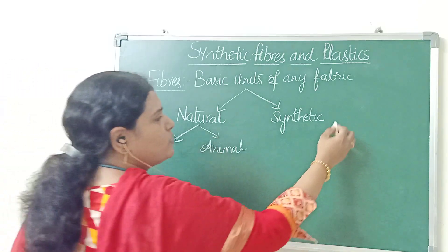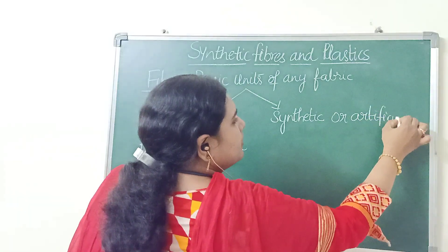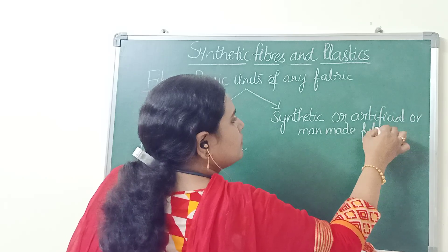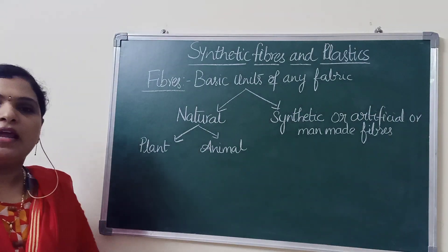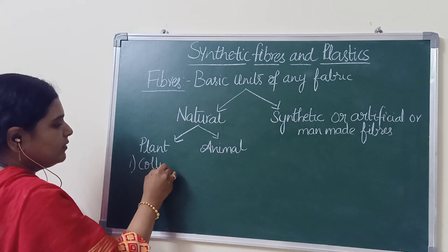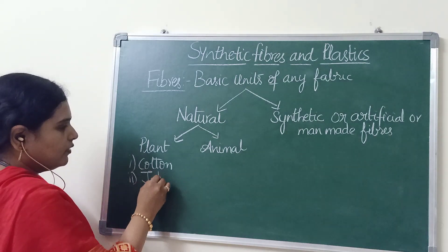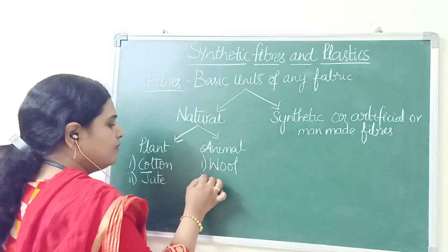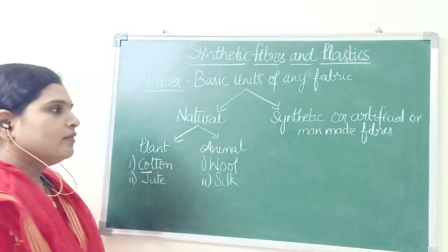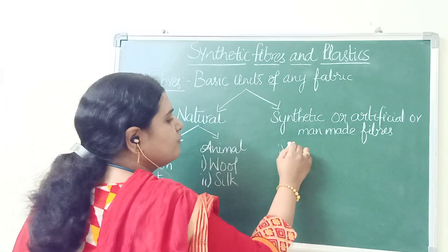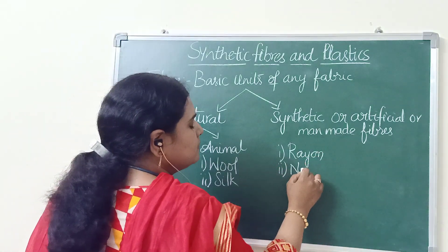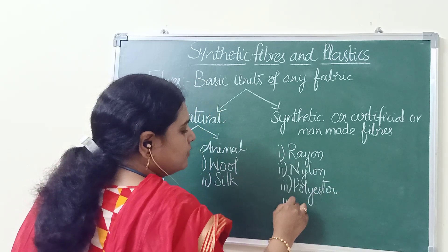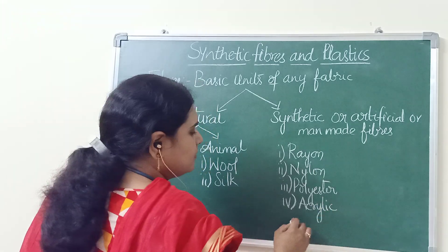Synthetic fibers are also called artificial fibers or man-made fibers. Examples for plant fibers: cotton and jute. Examples for animal fibers: wool and silk. And examples for synthetic fibers are rayon, nylon, polyester, acrylic, and spandex.